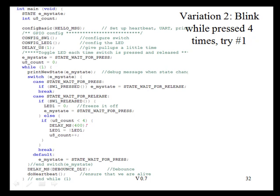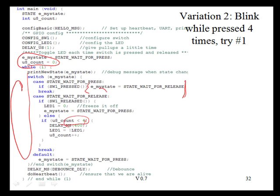The other problem was that it blinked the first time I pressed and released, but the second time when I pressed, it didn't blink at all. If we take a look at our counter, we're initializing it at the top, but once this test becomes false — once the count is greater than or equal to our value — we never initialize it back to zero. We're going to want to initialize that variable right here in the code before we enter this state, so when the switch is pressed, we set our count back to zero.